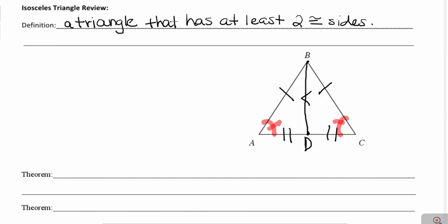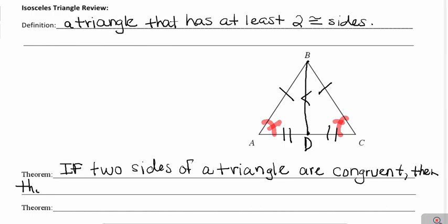Hopefully, the answer you're thinking is yes. Regardless of what type of isosceles triangle it is, the bottom base angles will always be congruent to each other. So we just proved the two theorems relating angles and sides of isosceles triangles. The first theorem says that if two sides of a triangle are congruent, then the angles across from those sides will also be congruent.